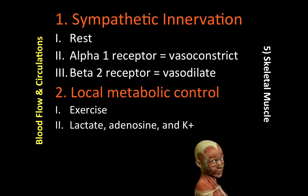There are both alpha-1 receptors and beta-2 receptors on the blood vessels of skeletal muscles. When we stimulate alpha-1 receptors, this causes vasoconstriction. When we stimulate beta-2 receptors, this causes vasodilation. So alpha-1 receptor causes vasoconstriction, and beta-2 receptor causes vasodilation.